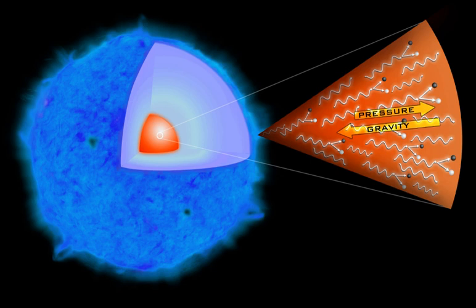Pair instability supernovae can only happen in stars with a mass range from around 130 to 250 solar masses and low to moderate metallicity, low abundance of elements other than hydrogen and helium, a situation common in population 3 stars.